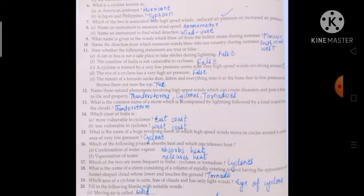Seventeen: which of the two are more frequent in India, cyclones or tornadoes? The right answer is cyclones. Eighteen: what is the name of a storm consisting of a column of rapidly rotating air and having the appearance of a funnel shaped cloud whose lower end touches the ground? Right answer is tornado.